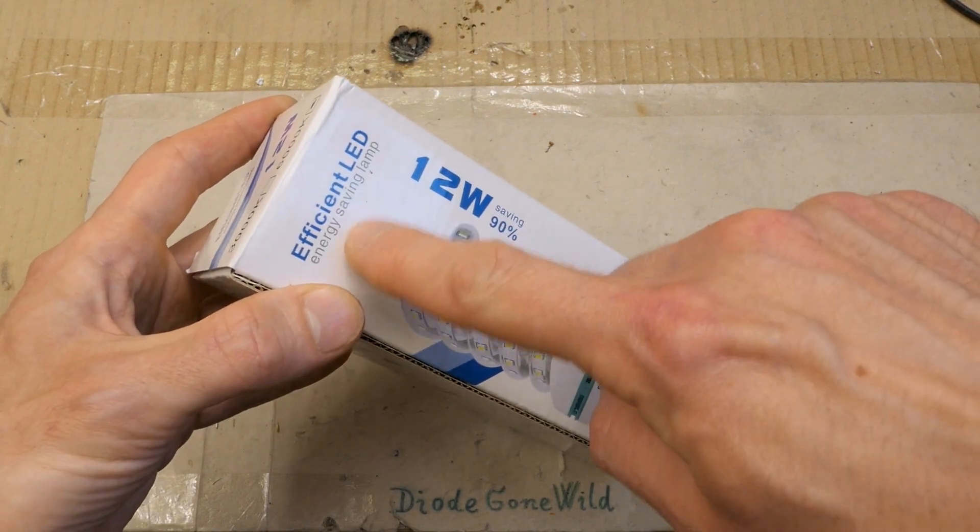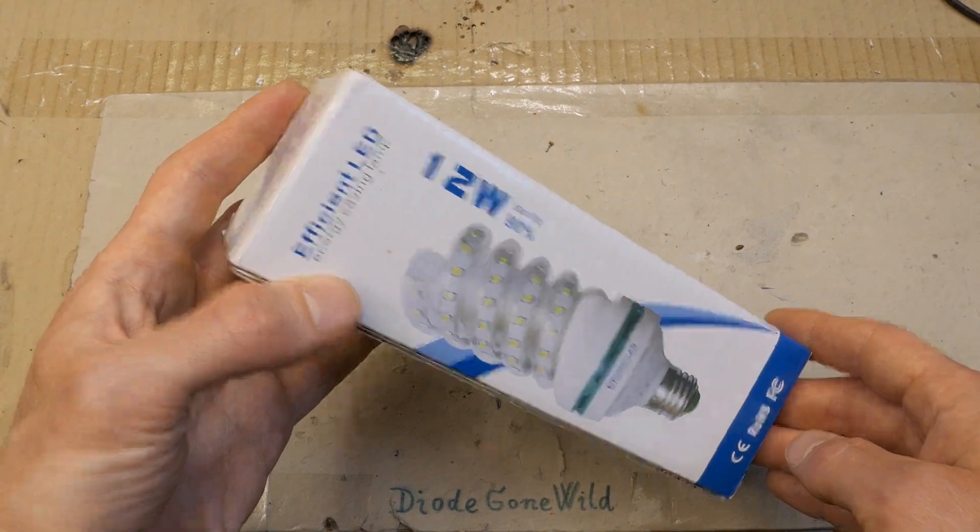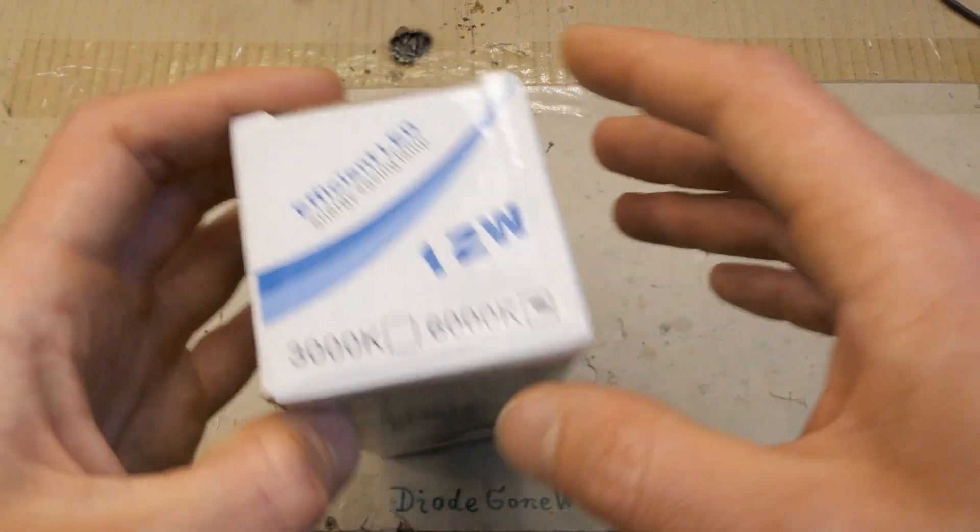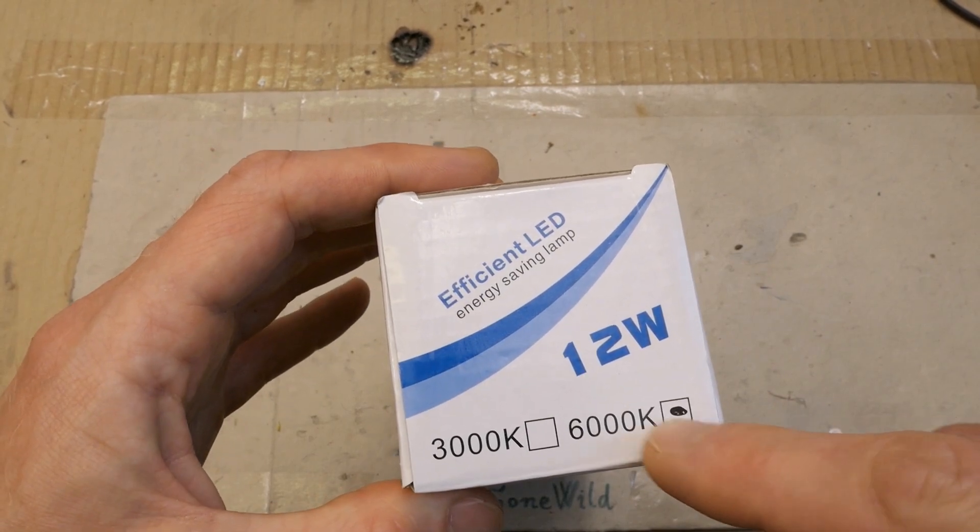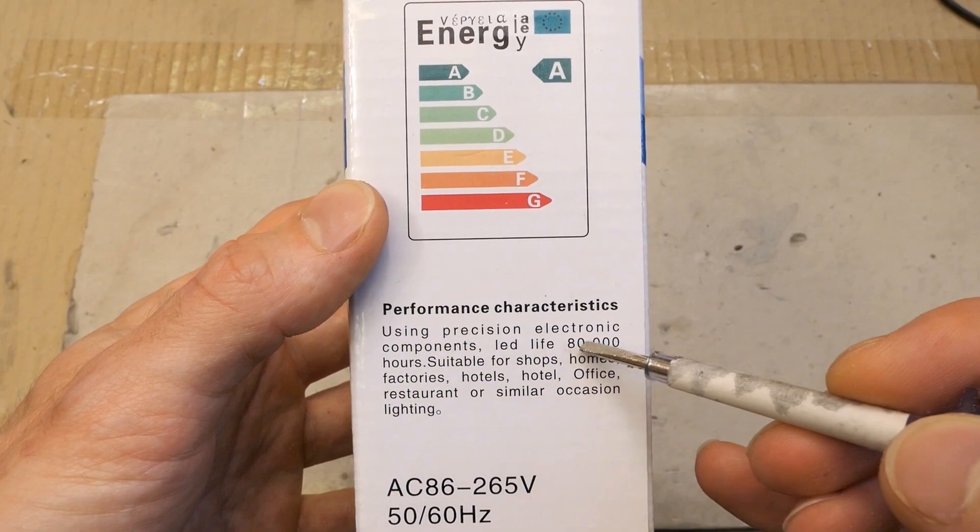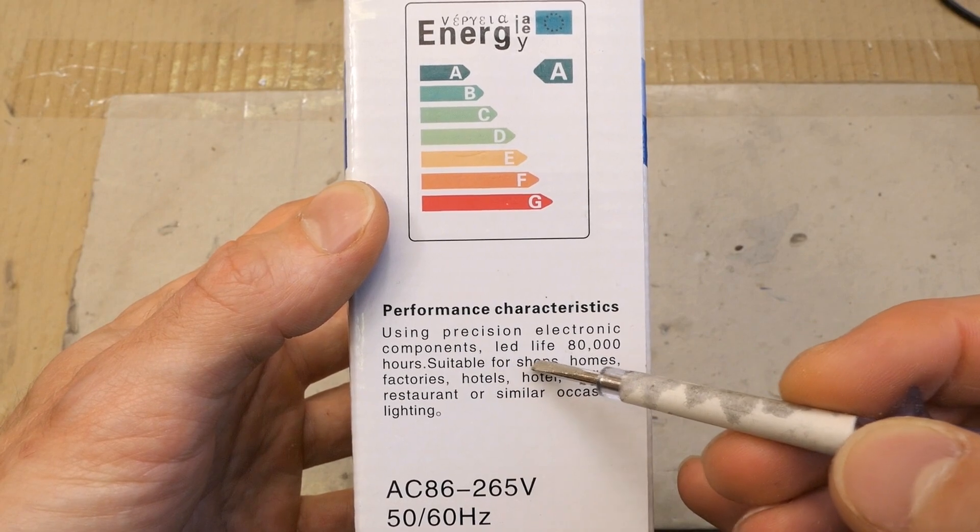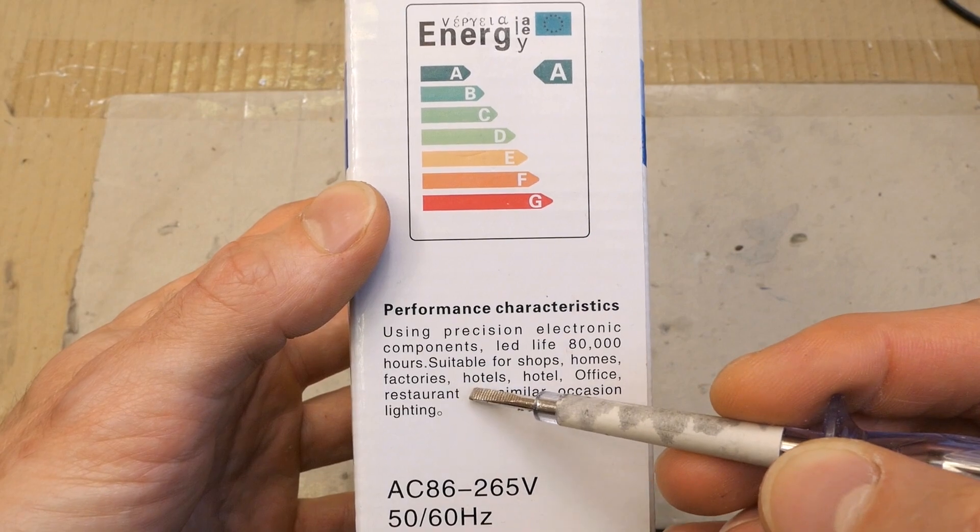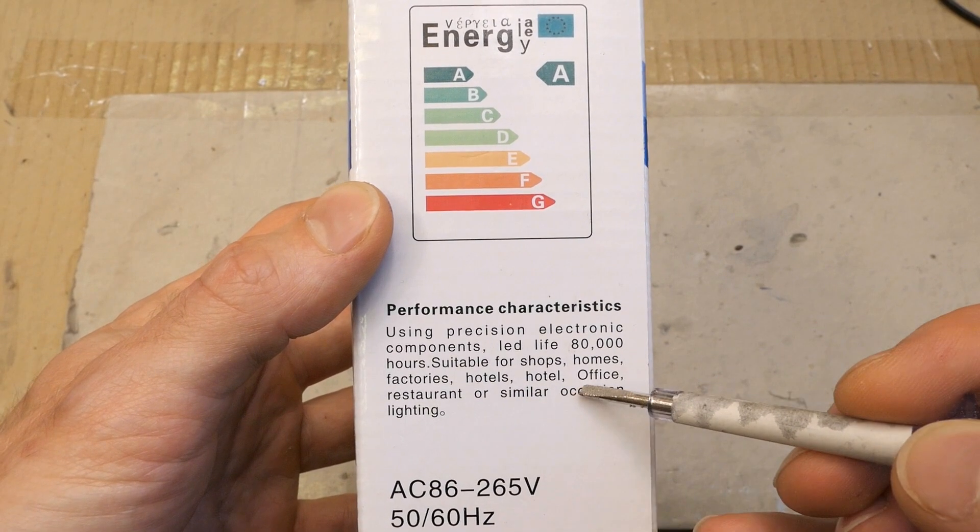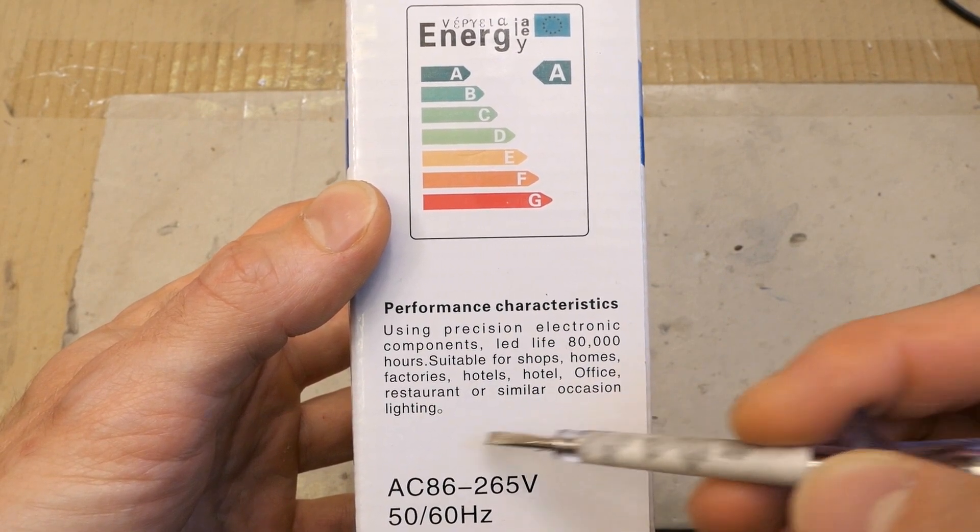Saving 90% efficient LED energy saving lamp. Here it again says efficient LED, efficient LED 6000 Kelvin, which is daylight color. Using precision electronic components LED life 80,000 hours, suitable for shops, homes, factories, hotels, office, restaurant or similar occasion lighting.